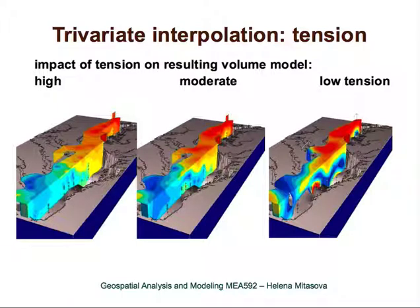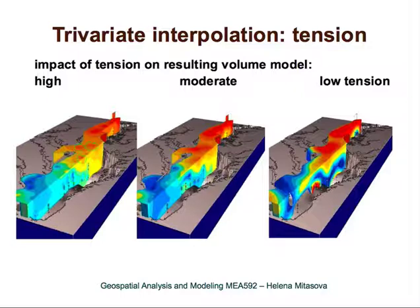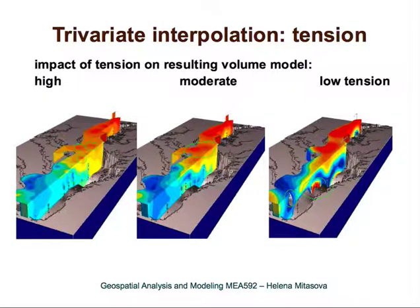We can use tension to influence the volume geometry. With high tension, values are biased towards the points, producing local maxima close to given points. As we lower the tension, the range of influence increases — local maxima stretch out, and instead of two local minima we may get one large blob. If we lower tension too much, we start to see overshoots, and all the maxima become very stretched out.